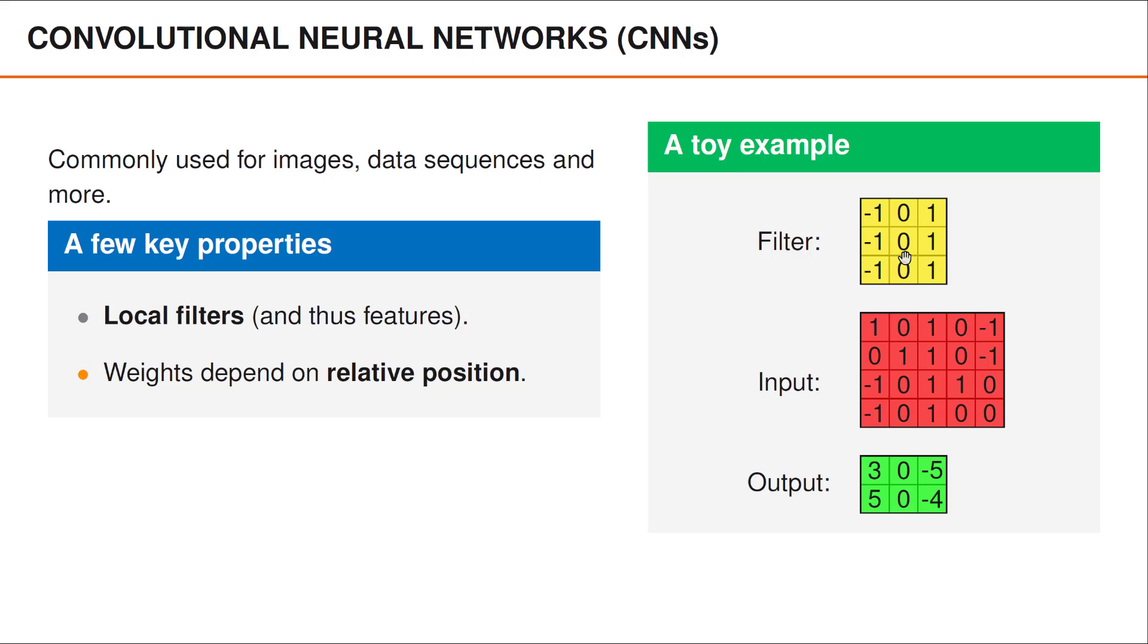For instance, in our toy example, the pixel to the right of the center pixel has weight 1, whereas the pixel below the center pixel has weight 0. Common CNNs also have several other important properties, such as weight sharing and pooling layers to downsample the image, but these are less important for our discussion.